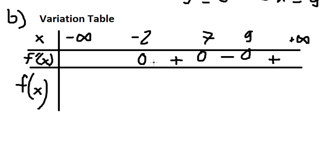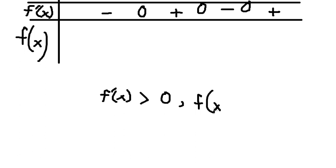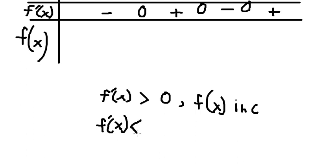So the sign in the far right region is positive. Going from right to left across the critical values, the signs alternate: positive, then negative, then positive, then negative. When the first derivative is greater than zero, the function is increasing. When the first derivative is less than zero, the function is decreasing.